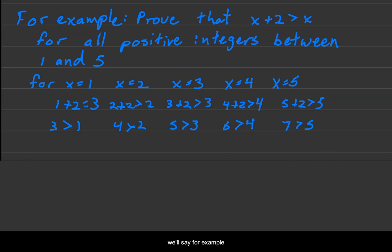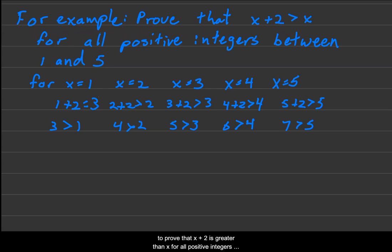For example, to prove that x plus 2 is greater than x for all positive integers between 1 and 5. We'll look at the first case being where x equals 1, then the second case where x equals 2, x equals 3 in the third case, x equals 4 in the fourth case, and x equals 5 in the last case, which will cover all possible values for this particular domain. That's why it's an exhaustive proof because it covers every individual value.